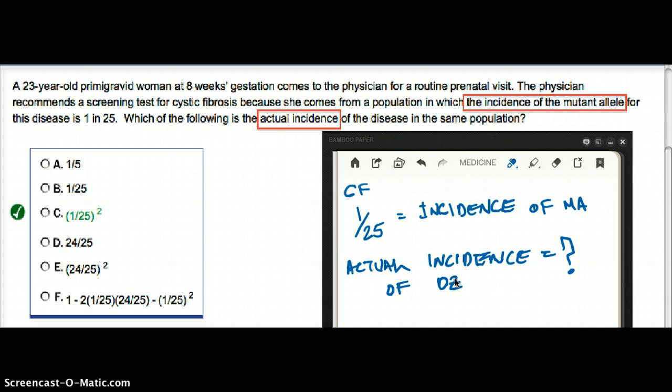So 1 in 25 is the incidence of the mutant allele. The probability of having the mutant allele is 1 in 25. Now we have to find the incidence of the disease. What is the probability of the disease, incidence of the disease?